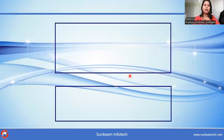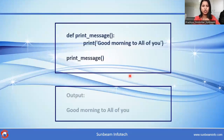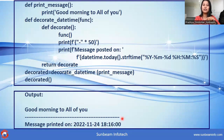Let us see the example. This is the simple function print_message and I am calling this function, and here is the output on the console. The same function I am trying to print using a decorator function. The message is the same but here I am getting the output with the current date and current time. So I am decorating this output by using the current date and time.